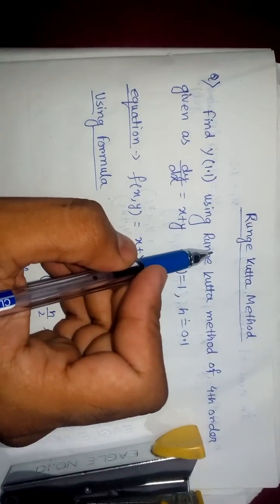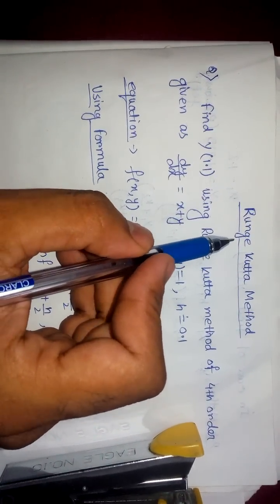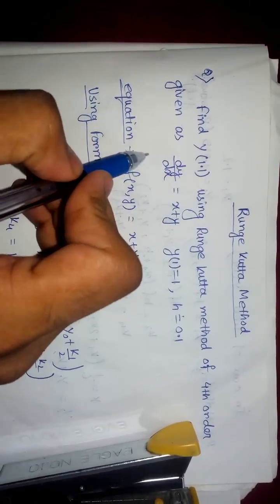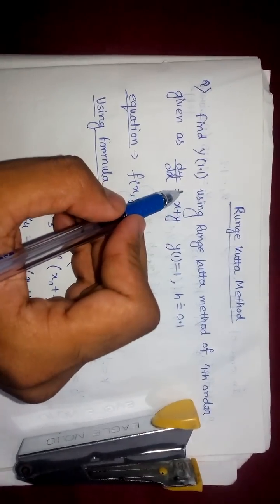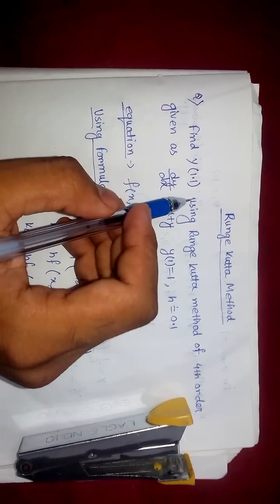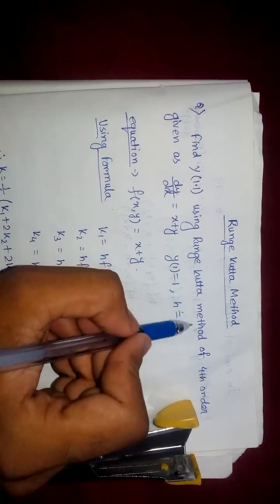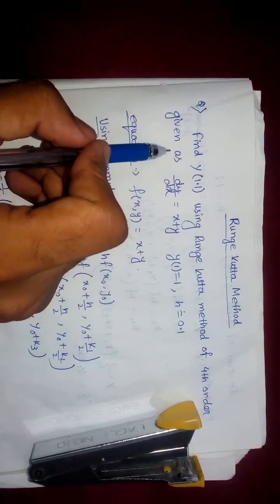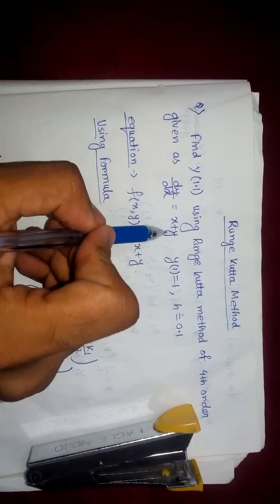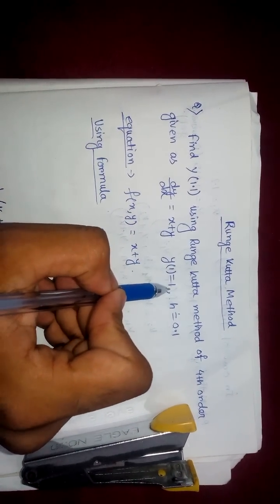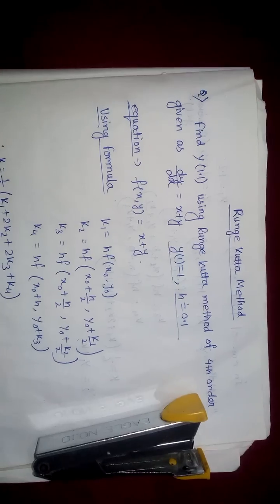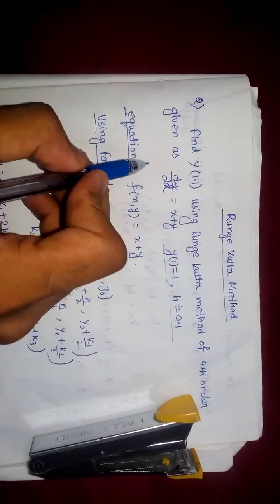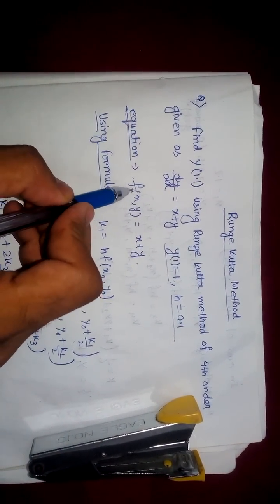Welcome friends. Today I'm going to discuss the Runge-Kutta method. This is also a method for differential equations, just like Euler's method and Euler's modified method. Here we have taken a question: find y(1.1) using the Runge-Kutta method of fourth order, given dy/dx equals x plus y, with initial condition y(1) equals 1, and h is given as 0.1.